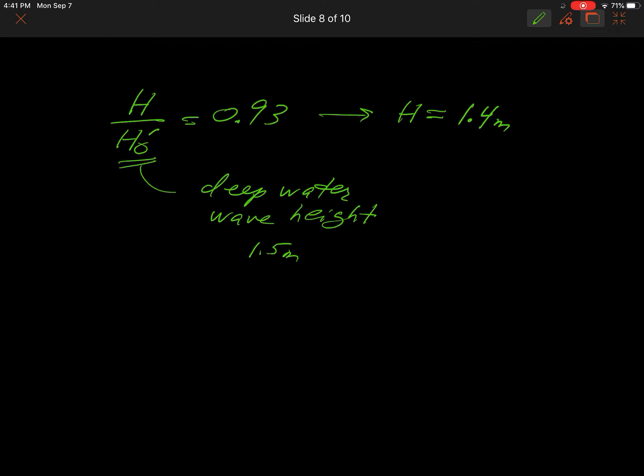We have a value of H over H naught prime is equal to 0.93. And if you remember, we said our deep water wave height is 1.5 meters for this problem—deep water wave height—and we said it was 1.5 meters. From that we get that the wave height in two meter depth is about 1.4 meters. So it's effectively 93 percent of what it was in the deep water.